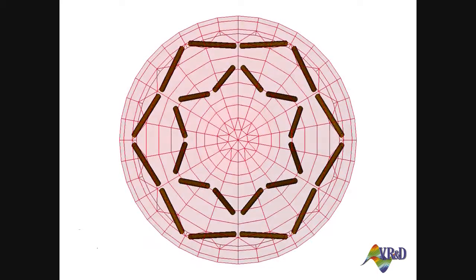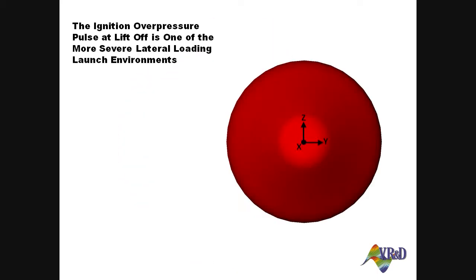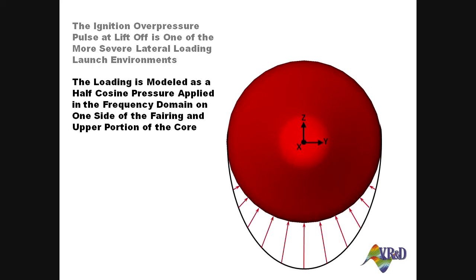One of the more severe environments is the rocket engine ignition overpressure pulse. Other lateral loading conditions may be caused by both ground winds and local aerodynamic turbulence from winds aloft. When using optimization to design structures, all loading should be considered and accounted for if they are considered primary loads.